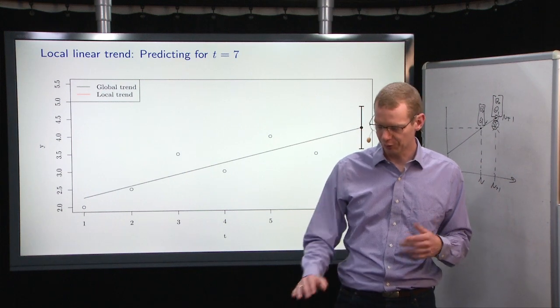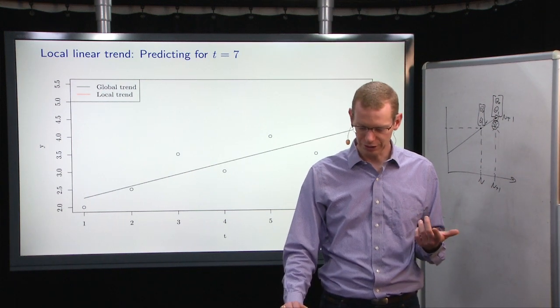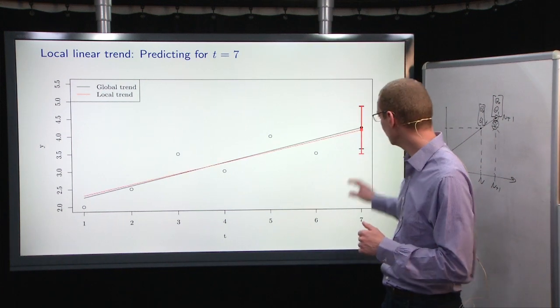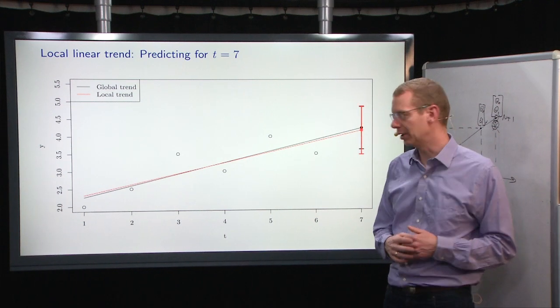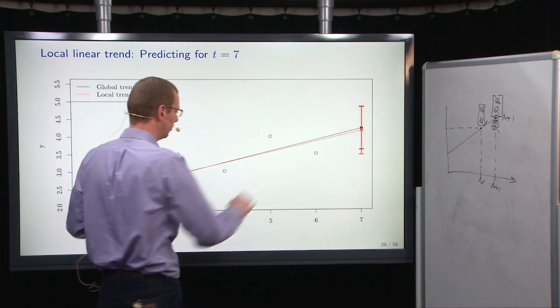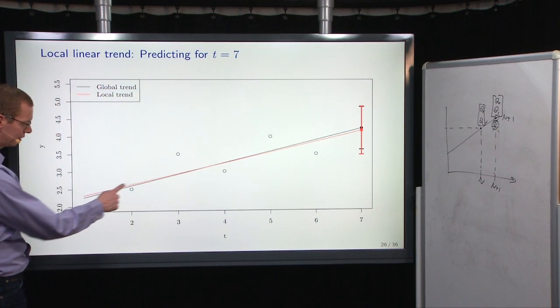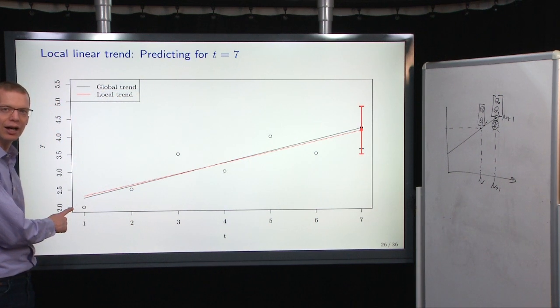Now, if we take the global model from before to look at that prediction, and we compare with the local model, well, we get almost the same. You can say, why is the slope a little bit different? Well, that may be because these observations down here has less weight.